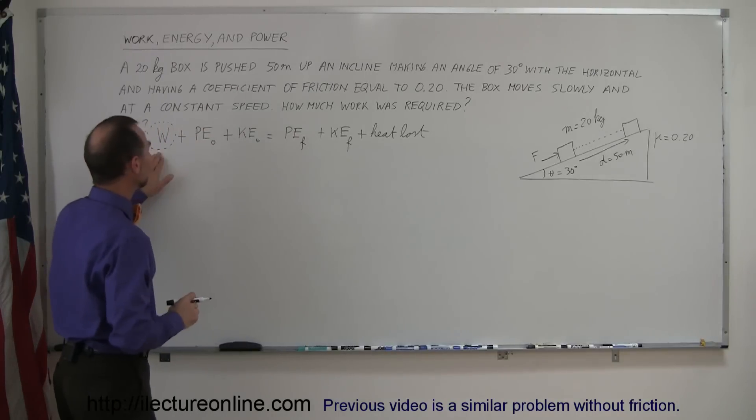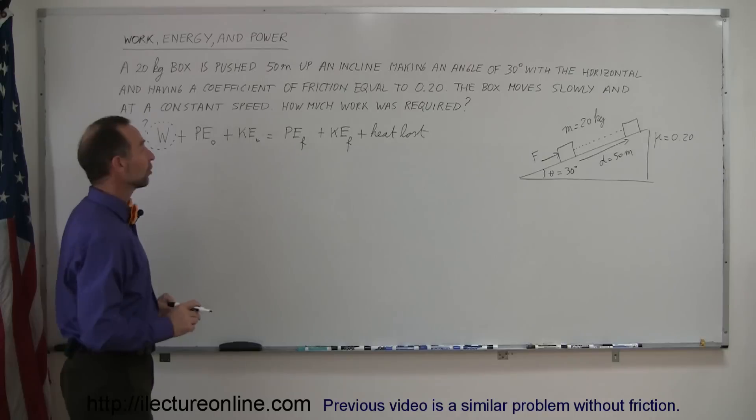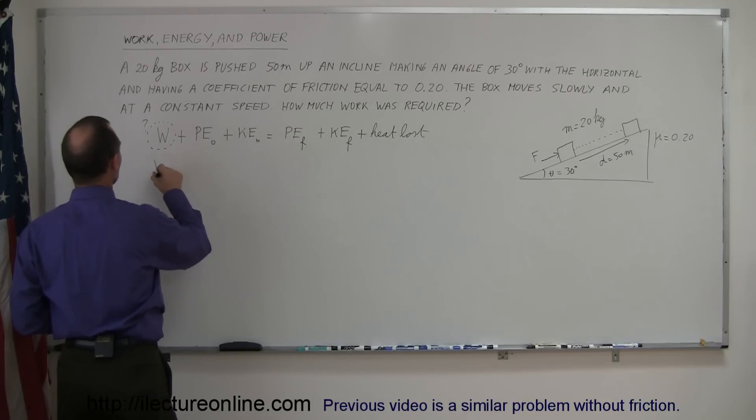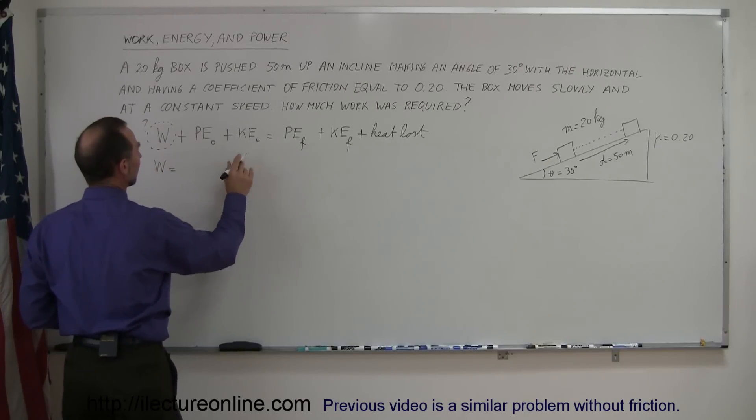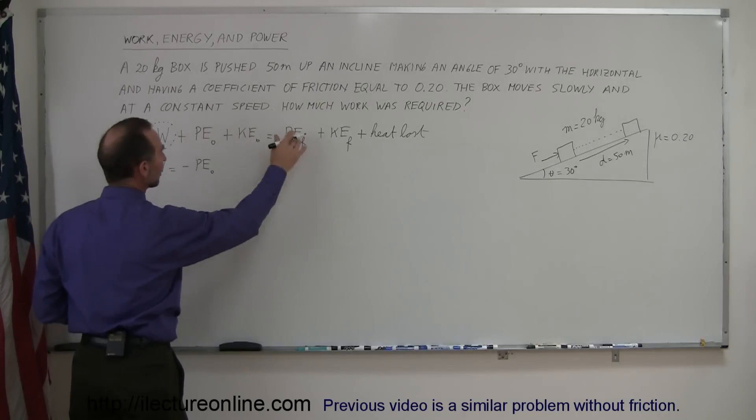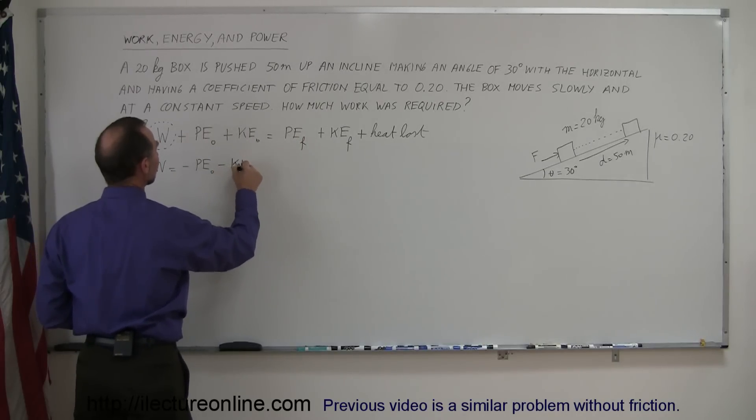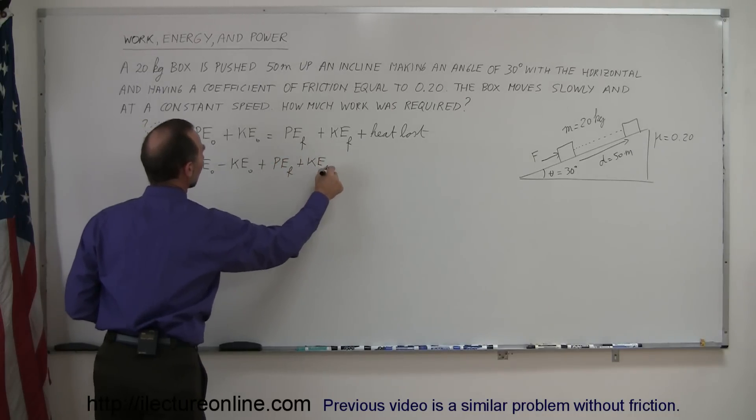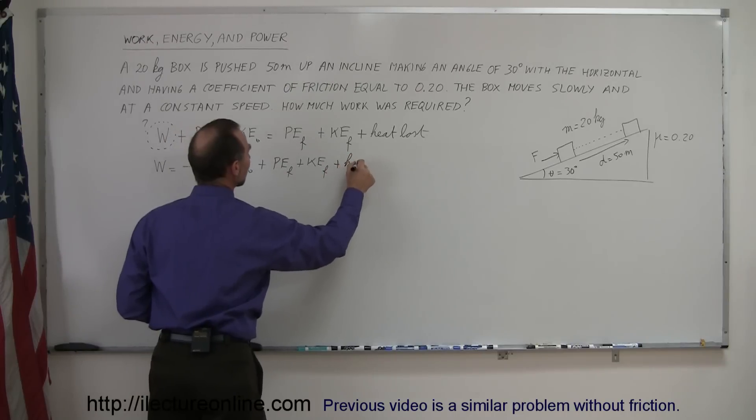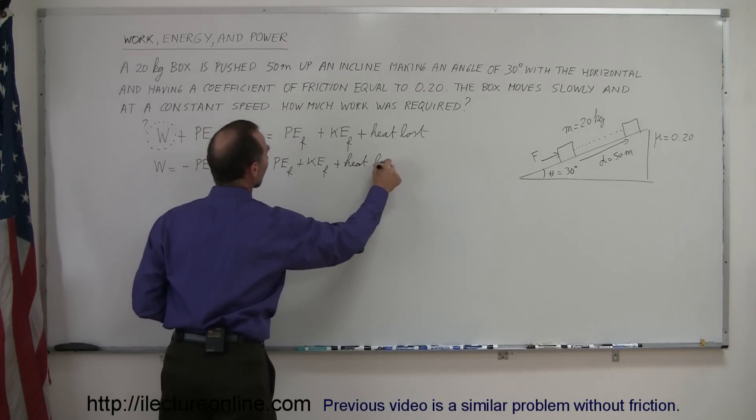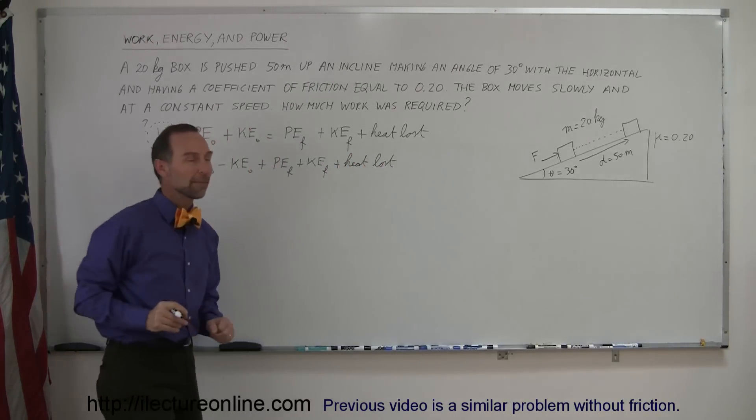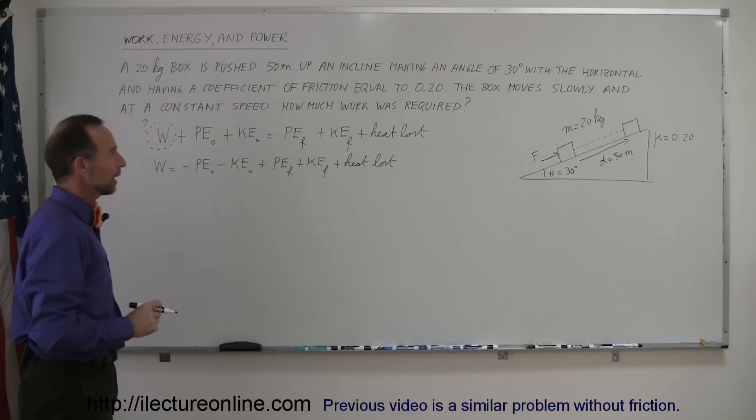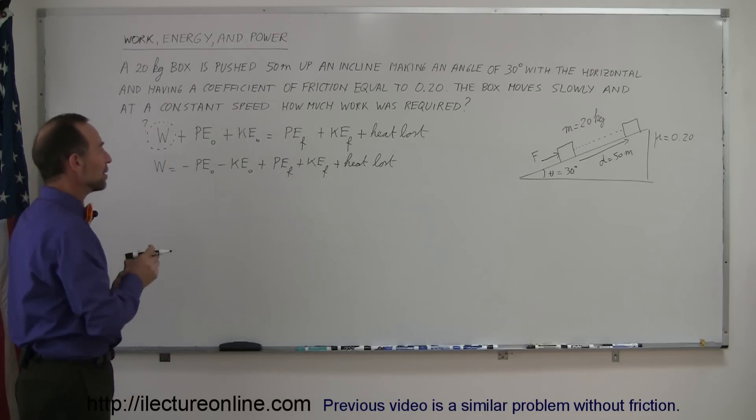So first of all, since we're looking for this, we need to move everything else over to the other side. So we can write that the work done is equal to minus the potential energy initial, as we move it across the equal sign, minus the kinetic energy initial, plus the potential energy final, plus the kinetic energy final, plus any heat lost to overcome the friction between the box and the incline. Okay, now let's put in whatever we know here.